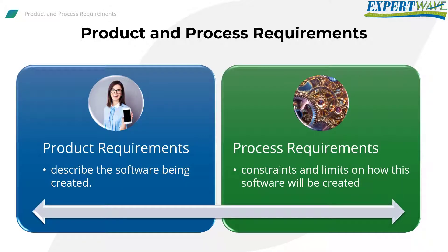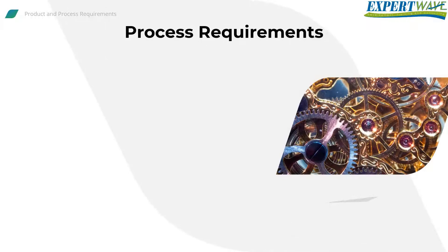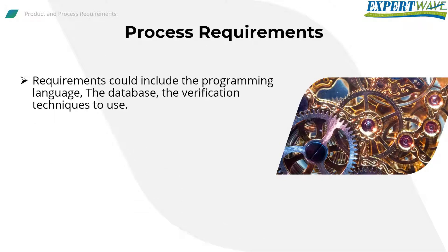Product Requirements describe the software being created, while Process Requirements are the constraints and limits on how the software will be created. For example, the client may ask that the language used to develop the software is Java, and the database is SQL.